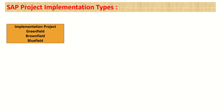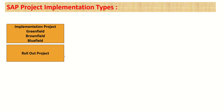The first type is called the implementation project. In the implementation project, we further have greenfield, brownfield, and bluefield. The next type of project is the rollout project, and then we have the support project. Let's understand each one in detail.